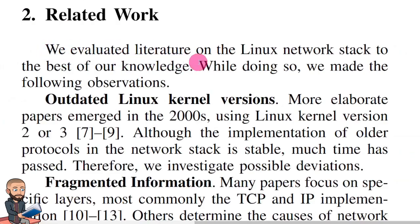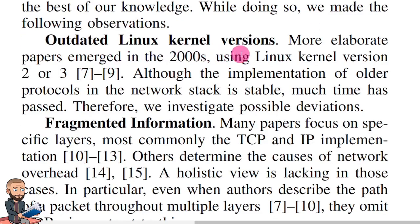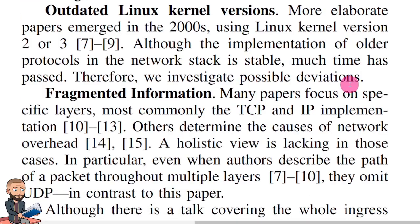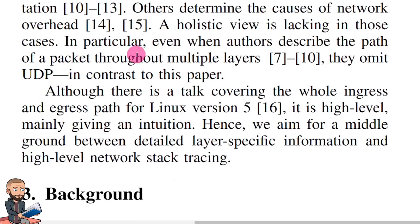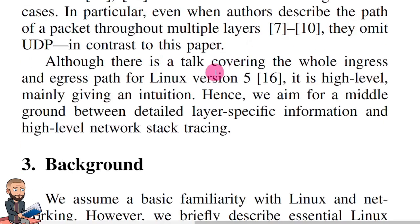Related work. We evaluated literature on the Linux network stack to the best of our knowledge and made the following observations. Outdated kernel versions: more elaborate papers emerged in the 2000s using Linux kernel version 2 or 3, although the implementation of older protocols in the network stack is stable, much time has passed, so we investigated possible deviations. Then there's fragmented information: many papers focus on specific layers, most commonly the TCP and IPv4 implementation, to determine the cause of networking overhead. A holistic view is lacking. In particular, even when authors describe the path of a packet throughout multiple layers, they omit UDP, in contrast to this paper.